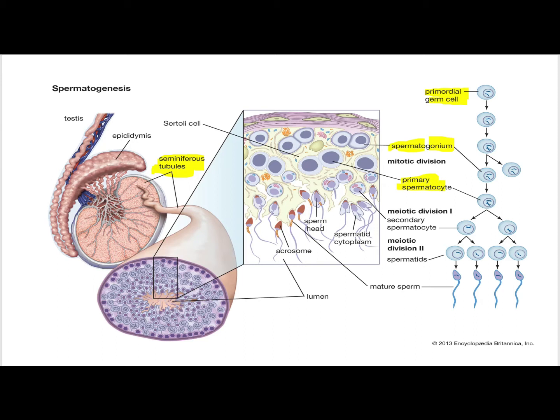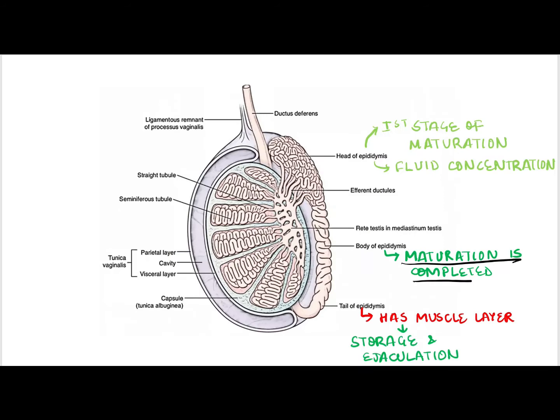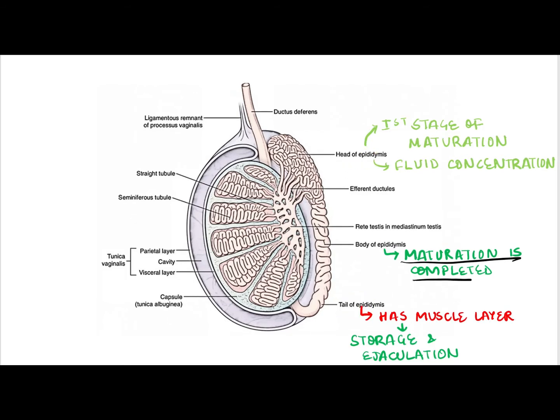Spermatozoa then go to the epididymis, which has three parts: head, body, and tail. In the head of the epididymis, the first stage of maturation and fluid concentration occurs. In the body, maturation of sperm is completed. In the tail, sperms are stored. The epididymis also has a muscle layer which helps in ejaculation.